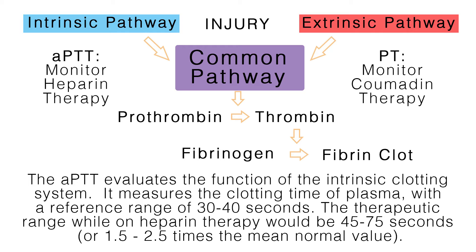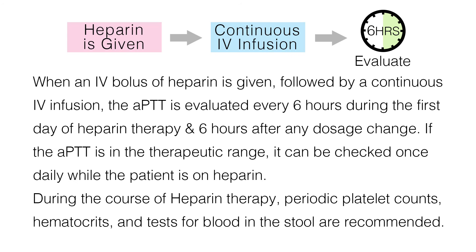When an IV bolus of heparin is given followed by a continuous IV infusion, the APTT is evaluated every 6 hours during the first day of heparin therapy and 6 hours after any dosage change. If the APTT is in the therapeutic range, it can be checked once daily while the patient is on heparin. During the course of heparin therapy, periodic platelet counts, hematocrits, and tests for blood in the stool are recommended. The APTT is not recommended for monitoring low molecular weight heparin, which will be discussed more later.